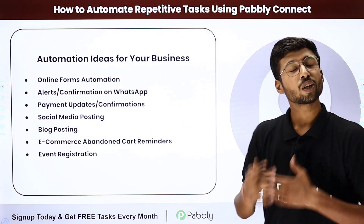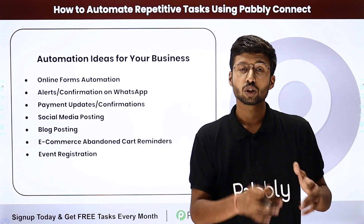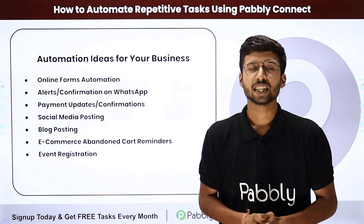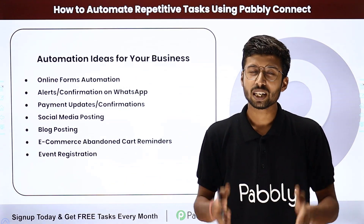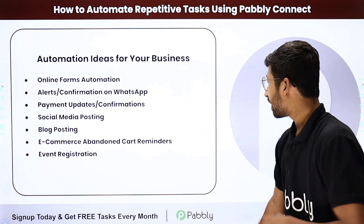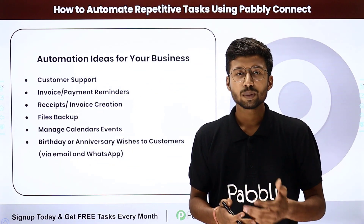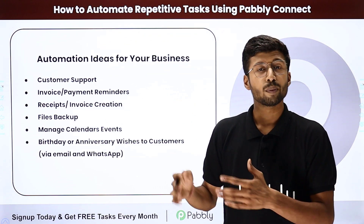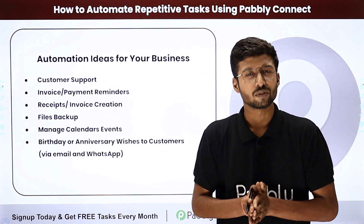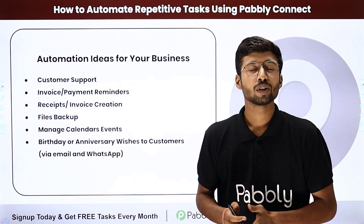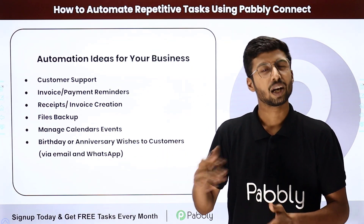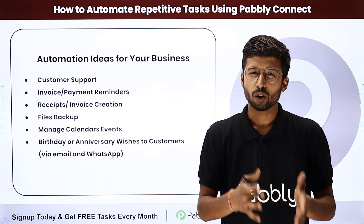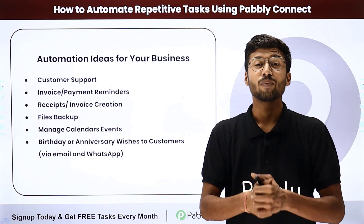Another use case is event registration. If you are hosting an event and using online forms or a payment gateway for ticket registration, you can automate that process with Pabbly Connect. The next use case is customer support — you can automate ticket assignment to team members equally using a round-robin lead assignment algorithm. For example, the first issue goes to team member one, the second to team member two, and so on, cycling back to the first member again.